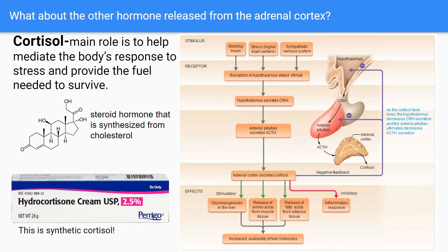When our body becomes stressed, the hypothalamus communicates with the pituitary using the same pathway we just discussed to release aldosterone. In fact, the hormone pathway from the hypothalamus to the pituitary is the primary controller of cortisol release from the adrenal cortex. Interestingly, epinephrine and norepinephrine released in a sympathetic fight-or-flight response can also result in a release of cortisol. Regardless of the stimuli, the ultimate end goal of cortisol is to enable cells throughout the body to access nutrients during prolonged stressful situations.